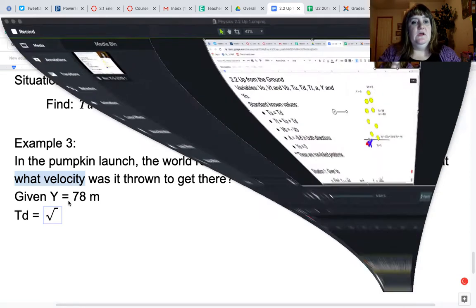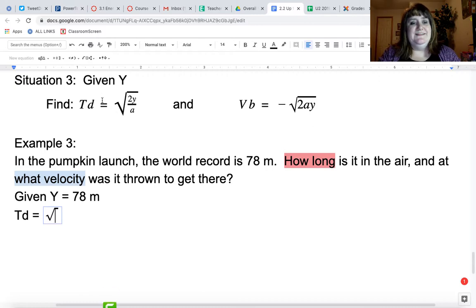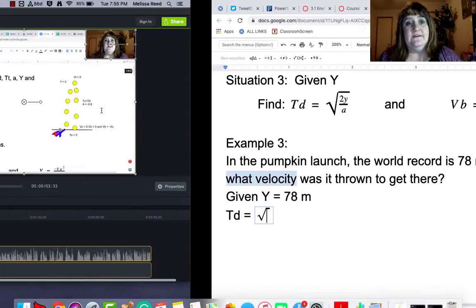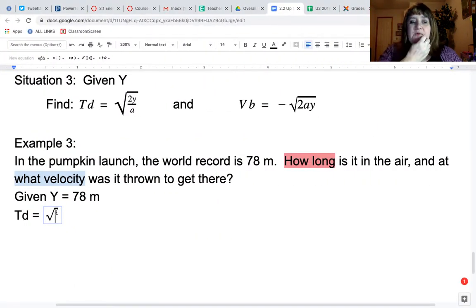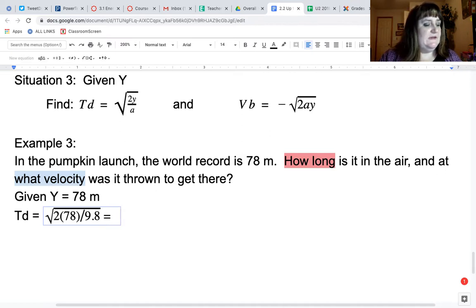Square root of 2 times 78 divided by 9.8. Remember that when we're looking at down or dropped falling objects, it doesn't really matter that it's negative or positive because it all ends up being the same thing anyway. So, square root of 2 times 78 divided by 9.8 is equal to 3.990 seconds.